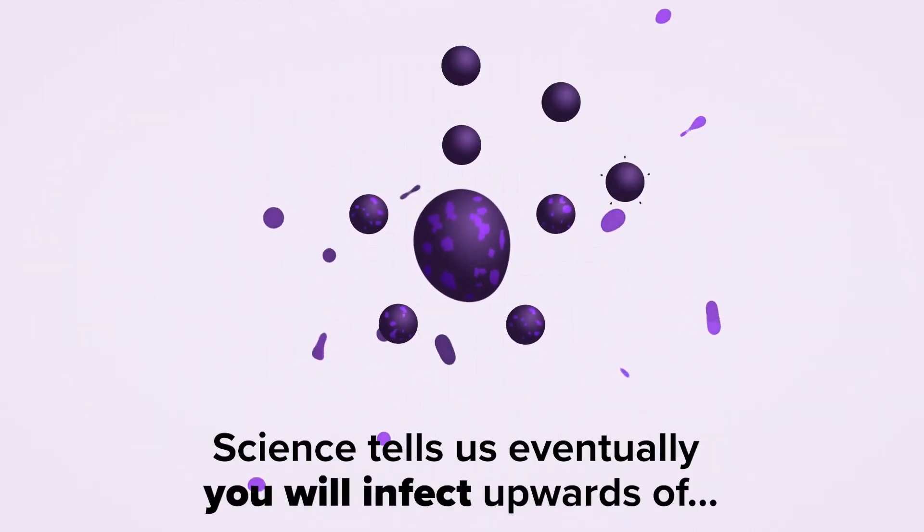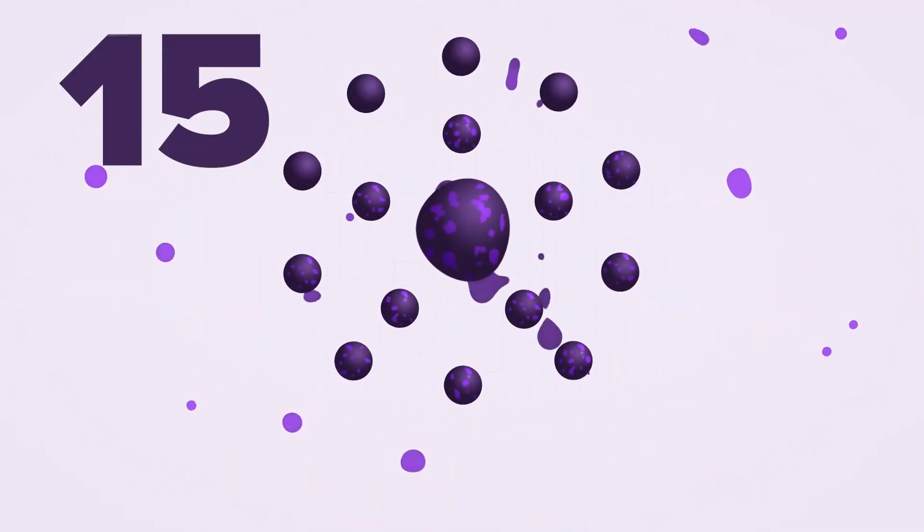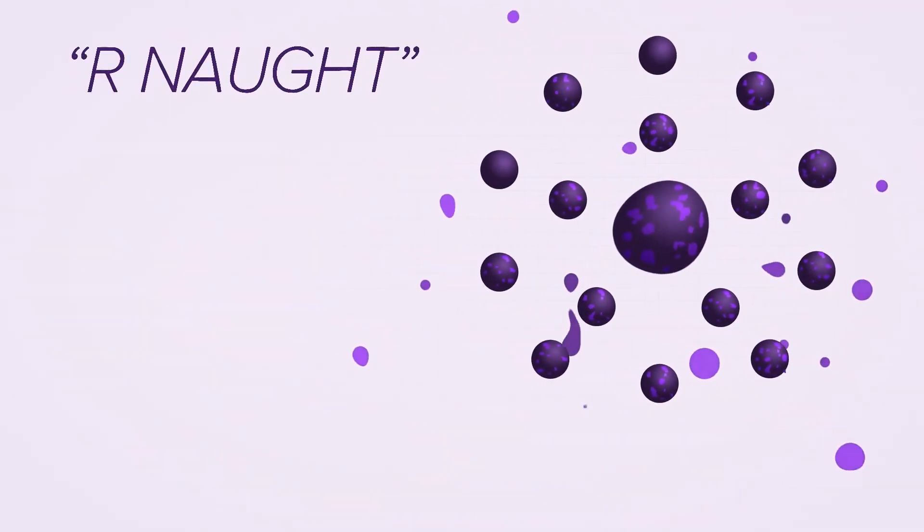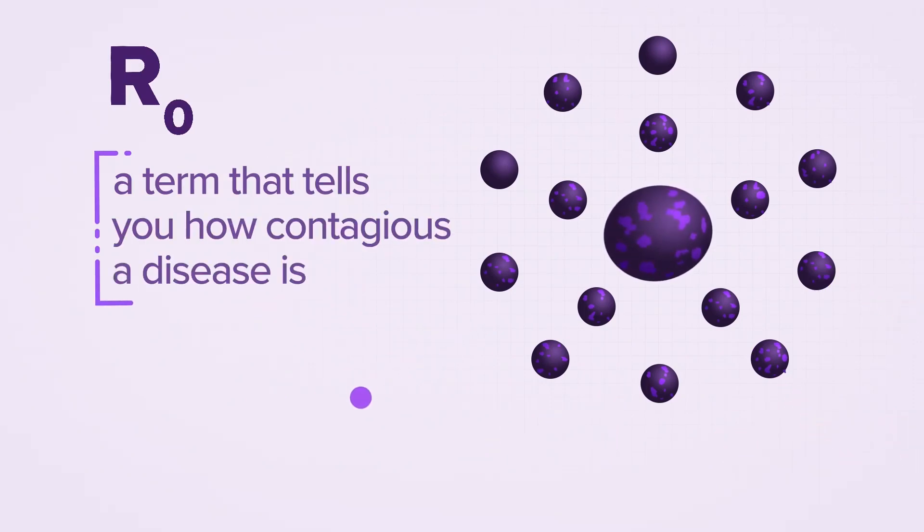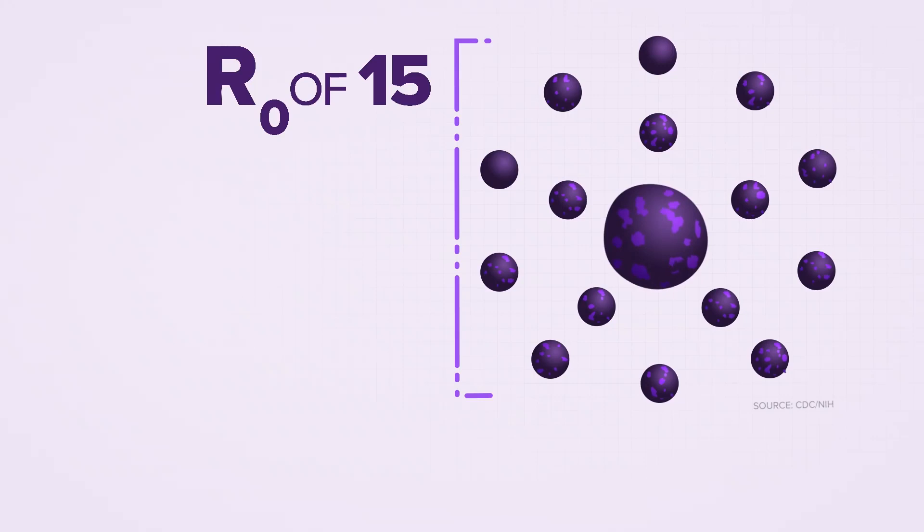Science tells us eventually you will infect upwards of 15 other dots, thanks to something known as an R-naught. Yep, R-naught. A fancy term that tells you how contagious a disease is. The R-naught of measles, around 15.